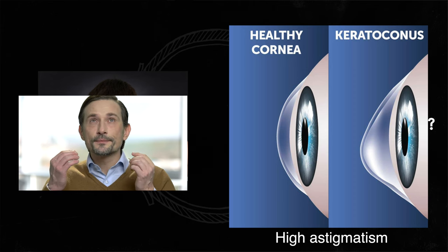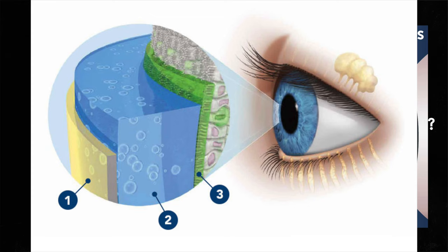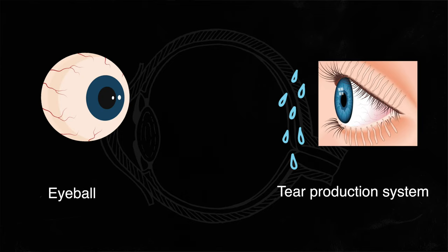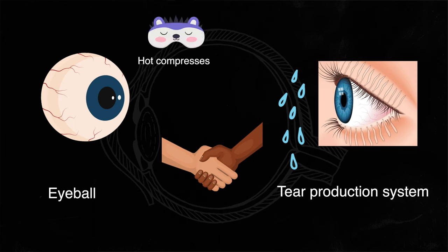To minimize the risk of eye rubbing, make sure your eyes remain moistened at all times. If they feel dry, they probably are. Your ultimate goal is to allow the eyeball and the tear production system to work in unison with one another. Hot compresses and using appropriate eye drops can be helpful tools in achieving this.